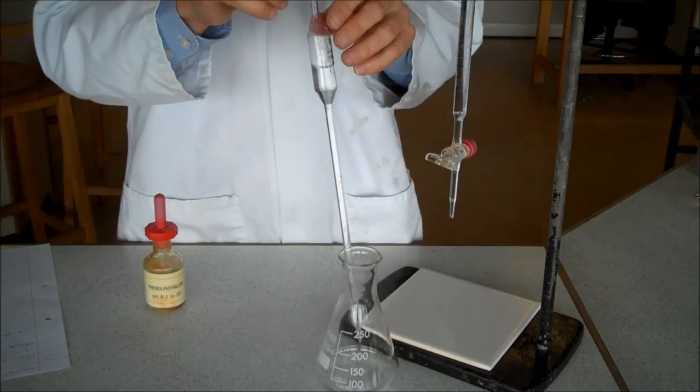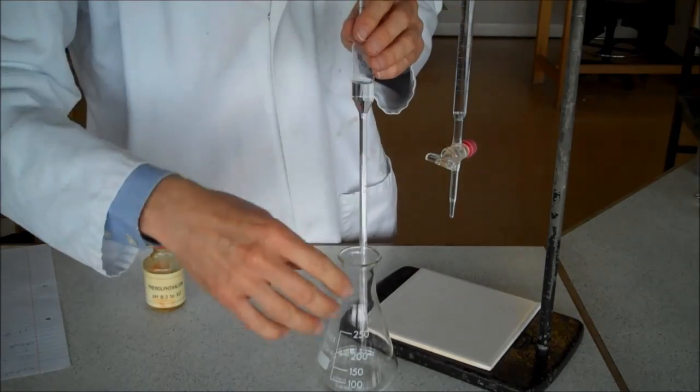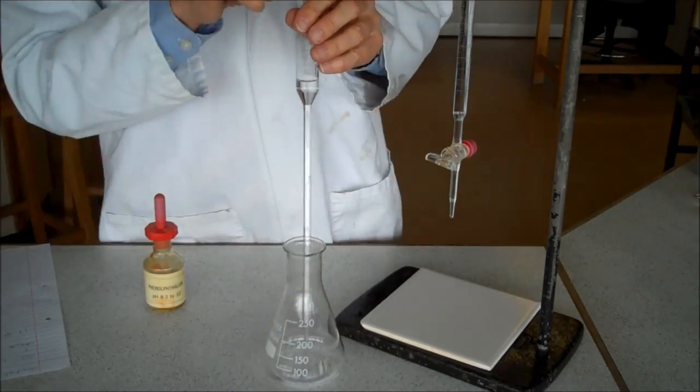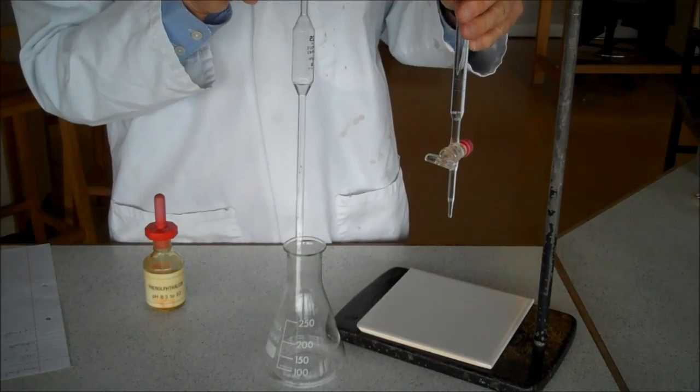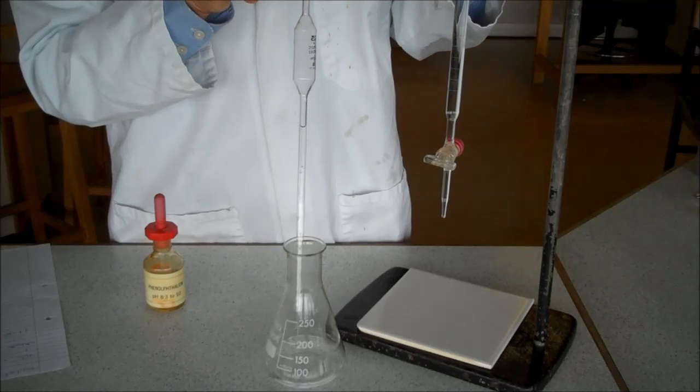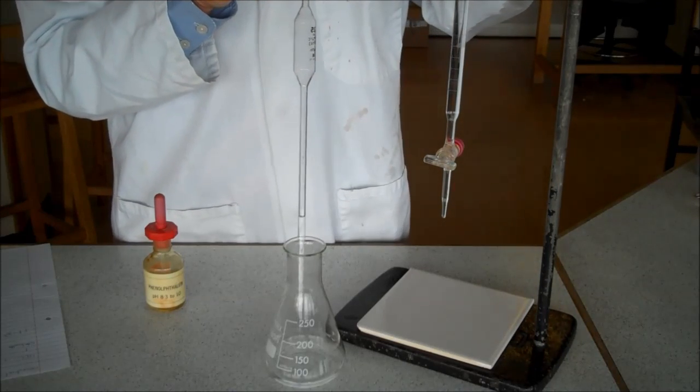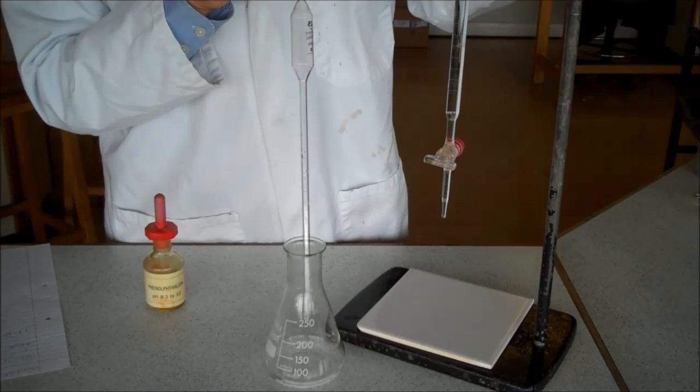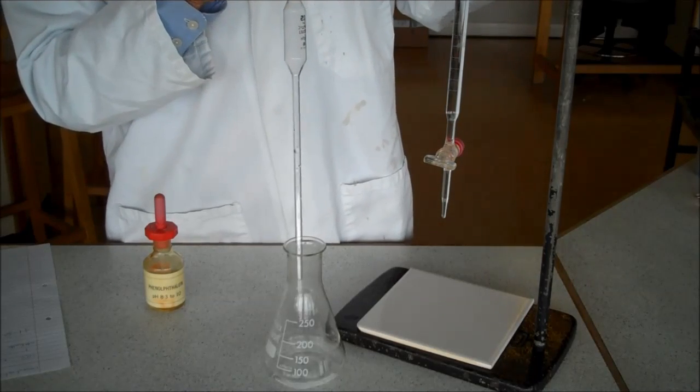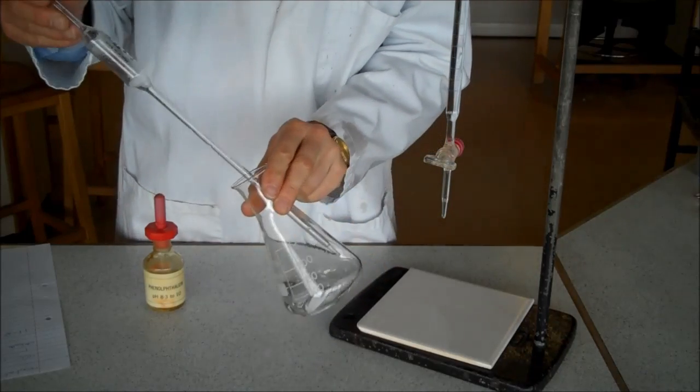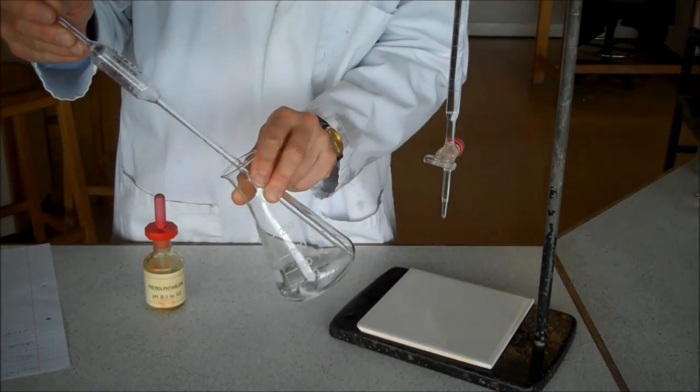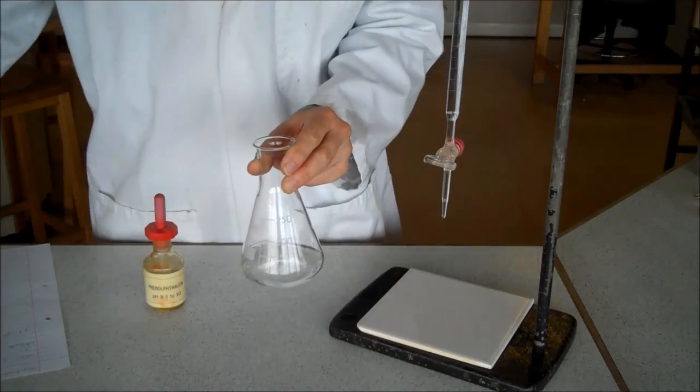In my burette, I put some hydrochloric acid. I've done that beforehand, but that hydrochloric acid in the burette is what I know the concentration of. In this instance, the concentration is exactly 0.1 moles per decimetre cubed. We're going to use that to work out our concentration of alkali.